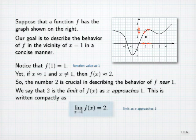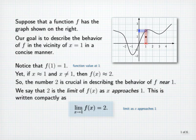To be a little more precise, the reason 2 is the limit as x approaches 1 is that, for any interval centered at 2 on the y-axis, no matter how small, the number f of x will be in that interval for all x other than 1 in some sufficiently small interval centered at 1 on the x-axis.